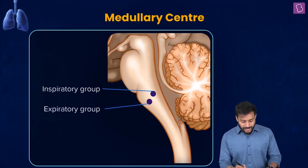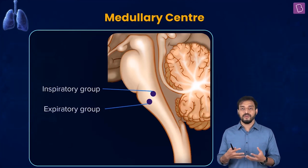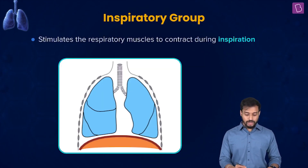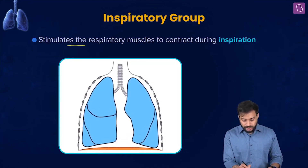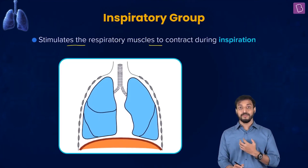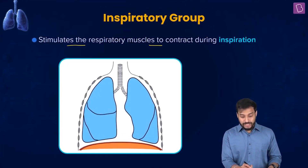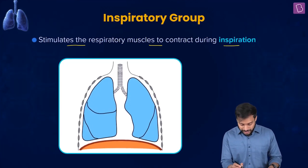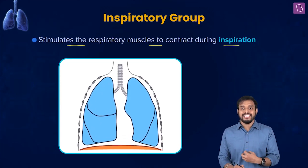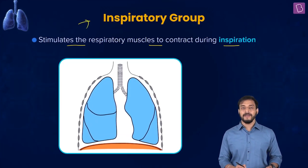It involves the inspiratory group and the expiratory group. The inspiratory group — inspiration, breathing in. The expiratory group — breathing out. The inspiratory group will stimulate the respiratory muscles to contract. Remember the diaphragm dome shape, the internal and external intercostal muscles. It stimulates the respiratory muscles to contract during inspiration. This center is what signals the muscles to contract so that inspiration can happen.